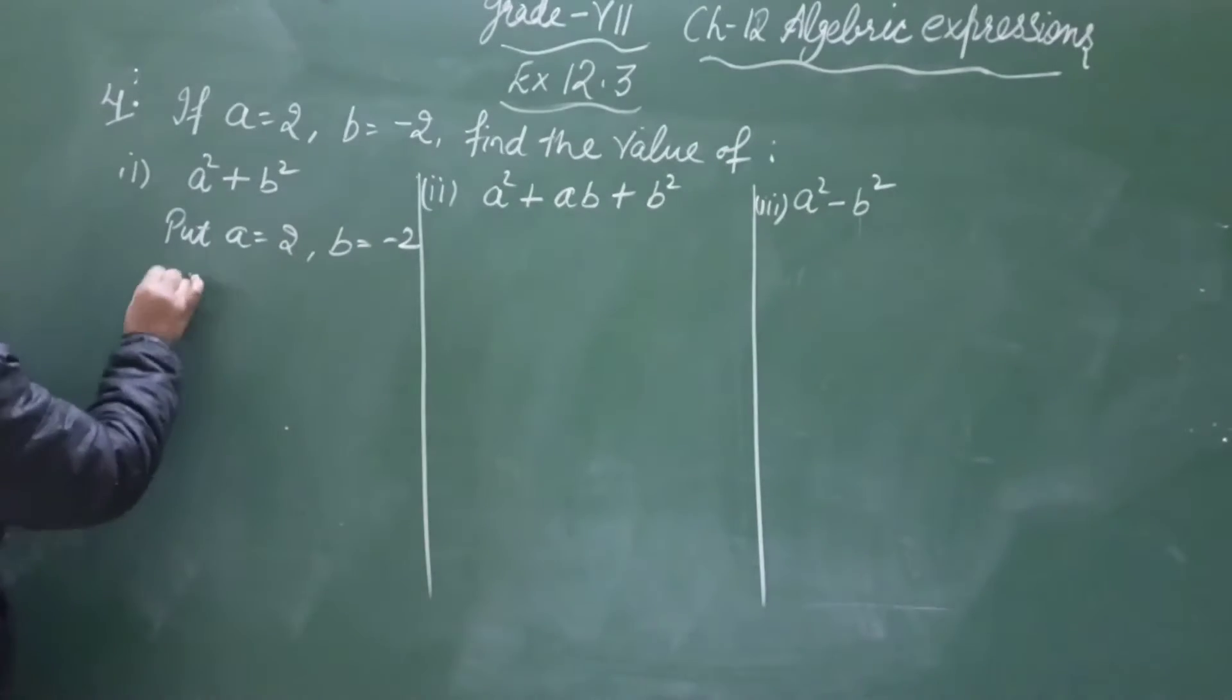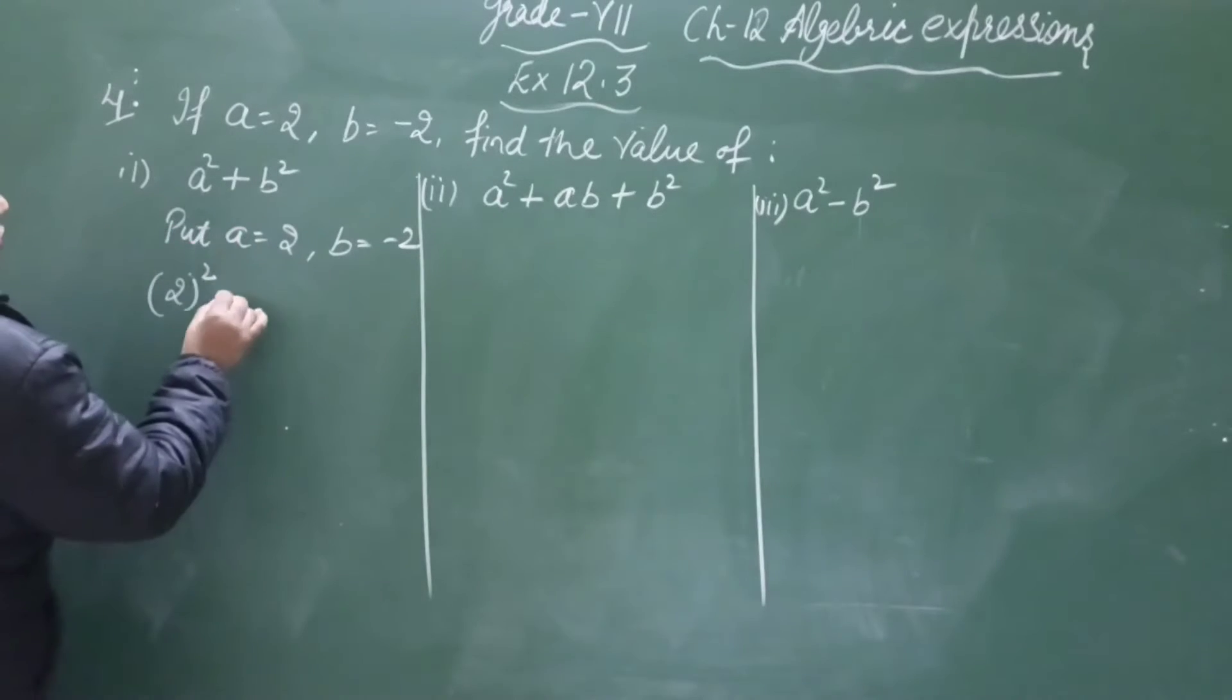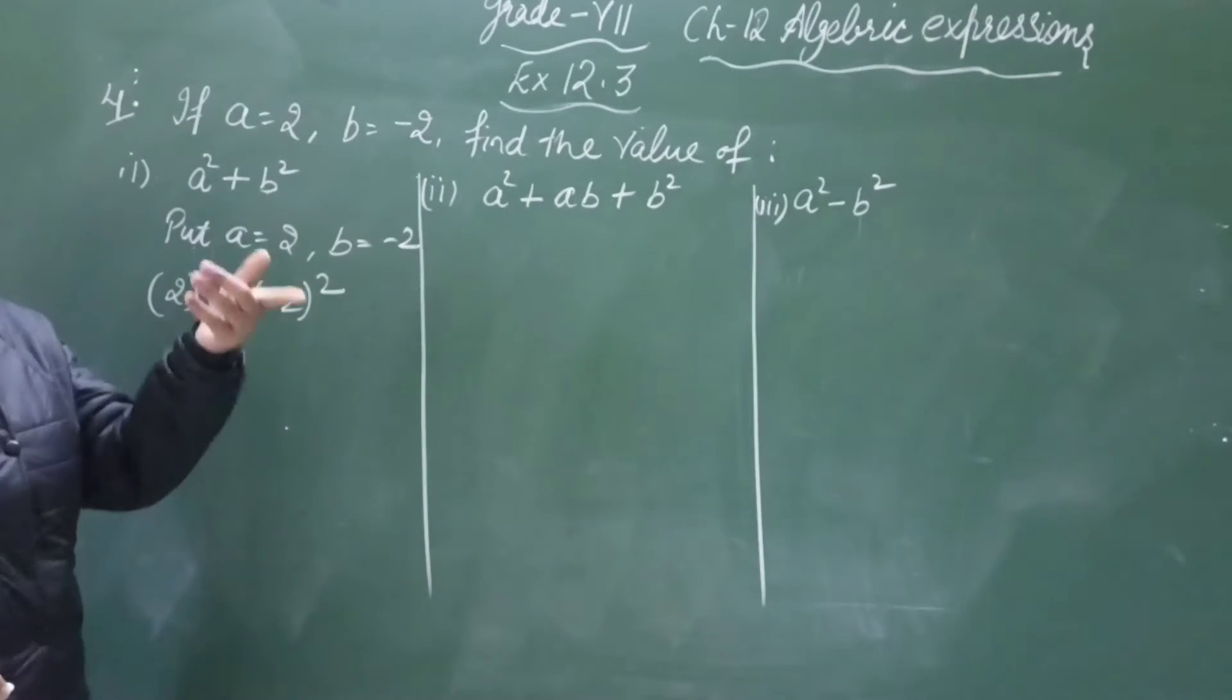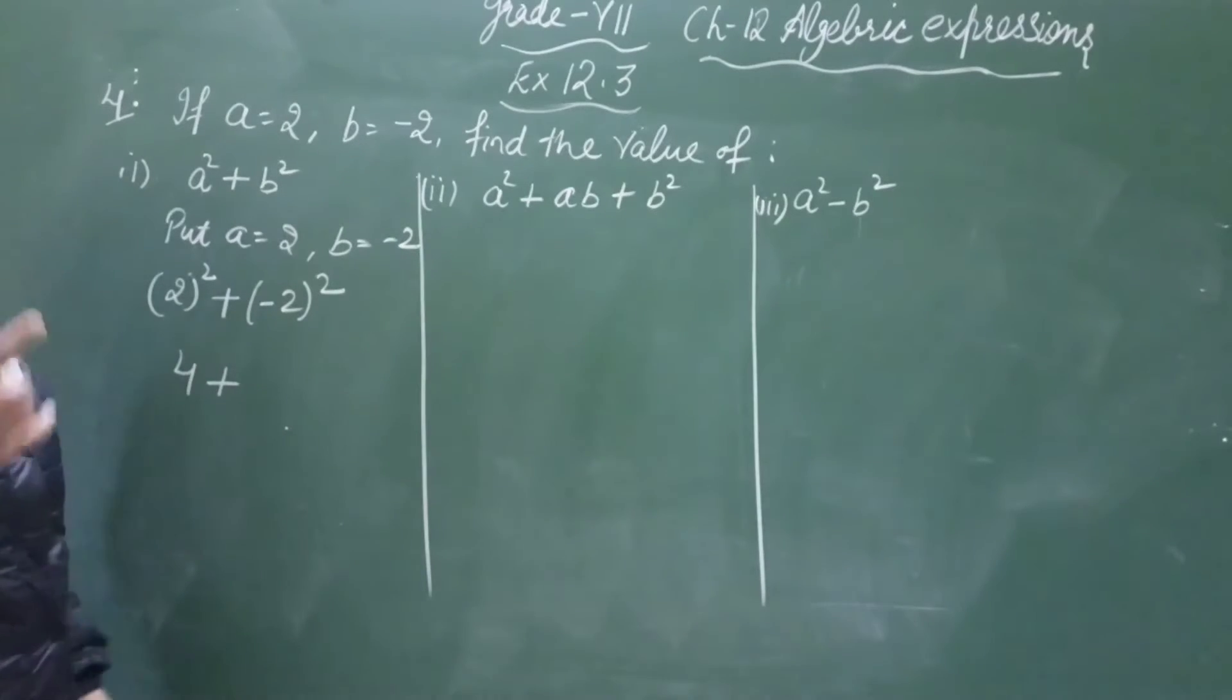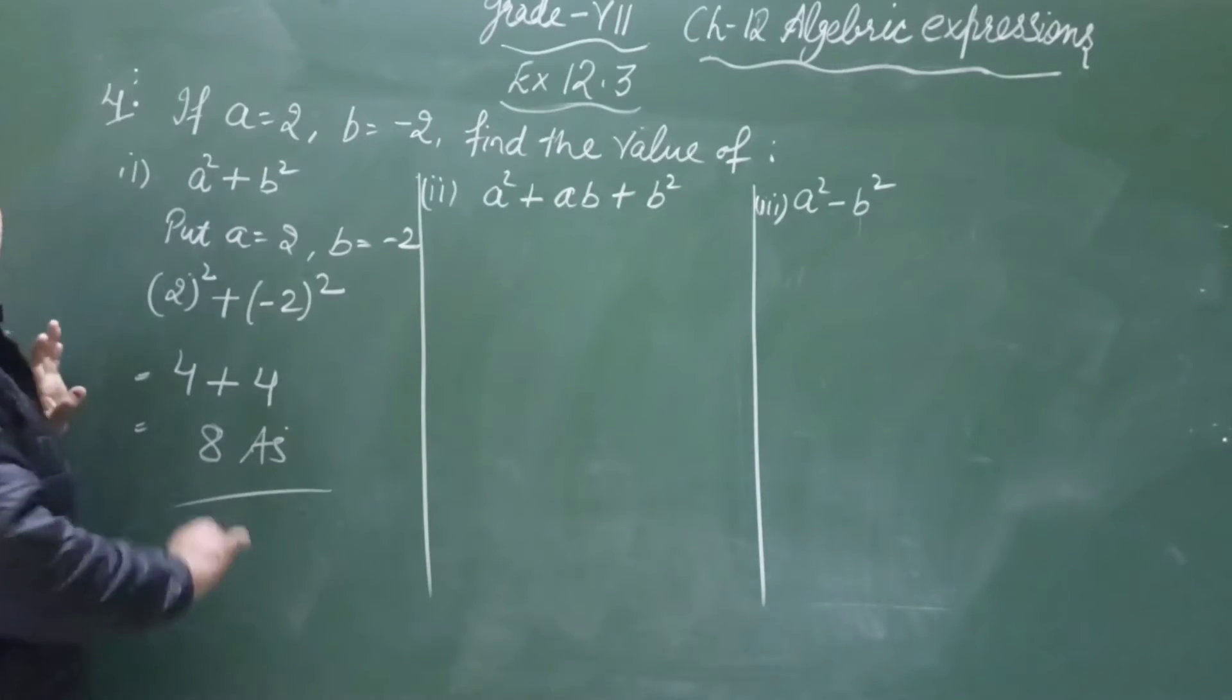So then 2 square, where there is a, we put 2. And b, that is minus 2. 2 square, 2 twos are 4, plus minus 2 square, 2 twos are 4. 4 plus 4, that is 8. This is our answer, clear?